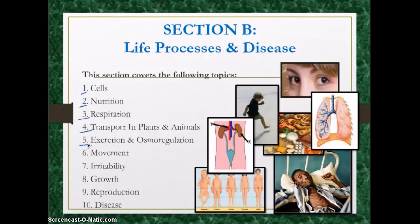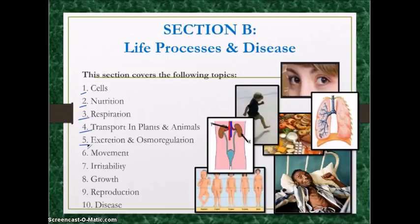Fifthly, excretion and osmoregulation. You should know the different excretory organs and their products — the kidneys, lungs, and skin. Know the structure of the kidneys, the nephron, how urine is made, and the role of ADH (antidiuretic hormone) in osmoregulation. You should also know about excretion in plants and the different ways plants get rid of their metabolic waste.